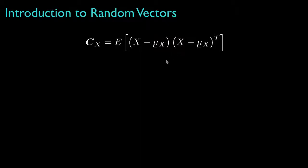Whereas the correlation matrix is an extension of the concept of the second moment to random vectors, the extension of the concept of variance is called the covariance, and the covariance matrix is defined as the expected value for the outer product of the random vector once we've removed its mean. With a little manipulation, it's easy to show that the covariance matrix is equal to the correlation matrix minus the outer product of the mean vector.